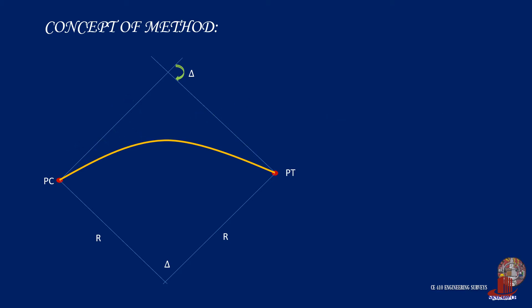Now let's derive the formula to use for distance O. Say we have a simple curve with radius R and central angle delta. From the elements of a simple curve, tangent line T is computed as the radius R multiplied by the tangent of half of the central angle delta. By knowing the tangent length, work with an interval. Always keep in mind that closer intervals will yield more accurate curves.